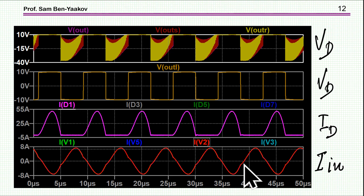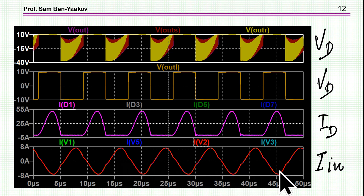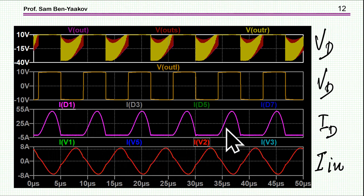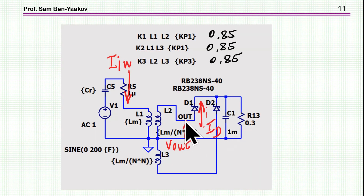Here are the results. This is the result of the four configurations. The ideal one — the generic or accurate one — and all the other equivalent circuits show exactly the same current, one on top of the other. This is the diode current — exactly the same. But look what happens with the voltage I mentioned.